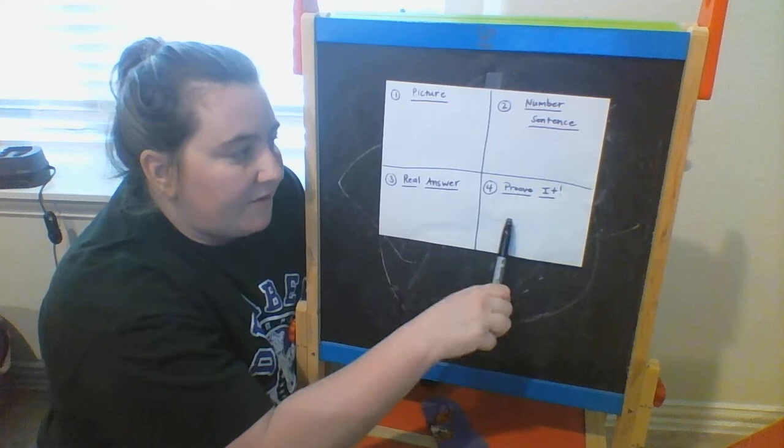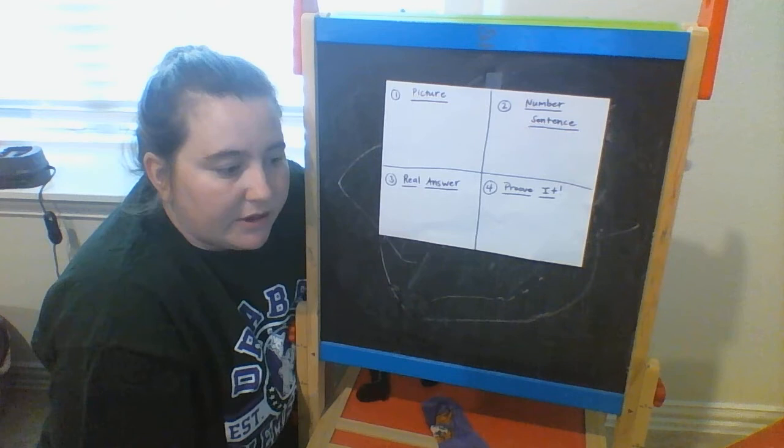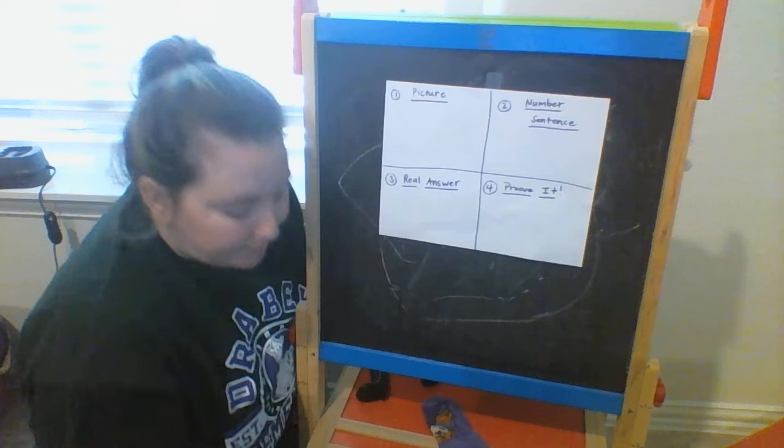The final part of solving a problem according to your checklist is proving it. Proving it means that you are going to show that you got the answer right by showing that answer in another way. All right, let's get started with the first problem that I'm going to solve for you.